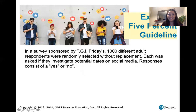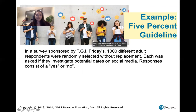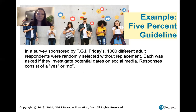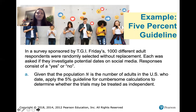Here's an example. The problem statement says: in a survey sponsored by TGI Fridays, 1,000 different adult respondents were randomly selected without replacement. Each respondent was asked if they investigate potential dates on social media, with responses of yes or no. The question is: given that the population N is the number of adults in the US who date, apply the 5% guideline to determine whether the trials may be treated as independent. We're selecting without replacement, so in general each trial is dependent — but can we treat them as independent?